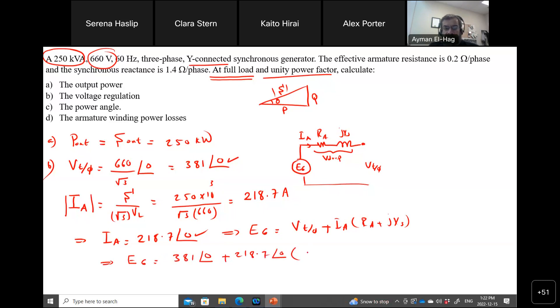times R_A, which is equal to 0.2, plus j1.4. And this will give me a voltage equal to 523 angle of 36 volt. This is your E_A.